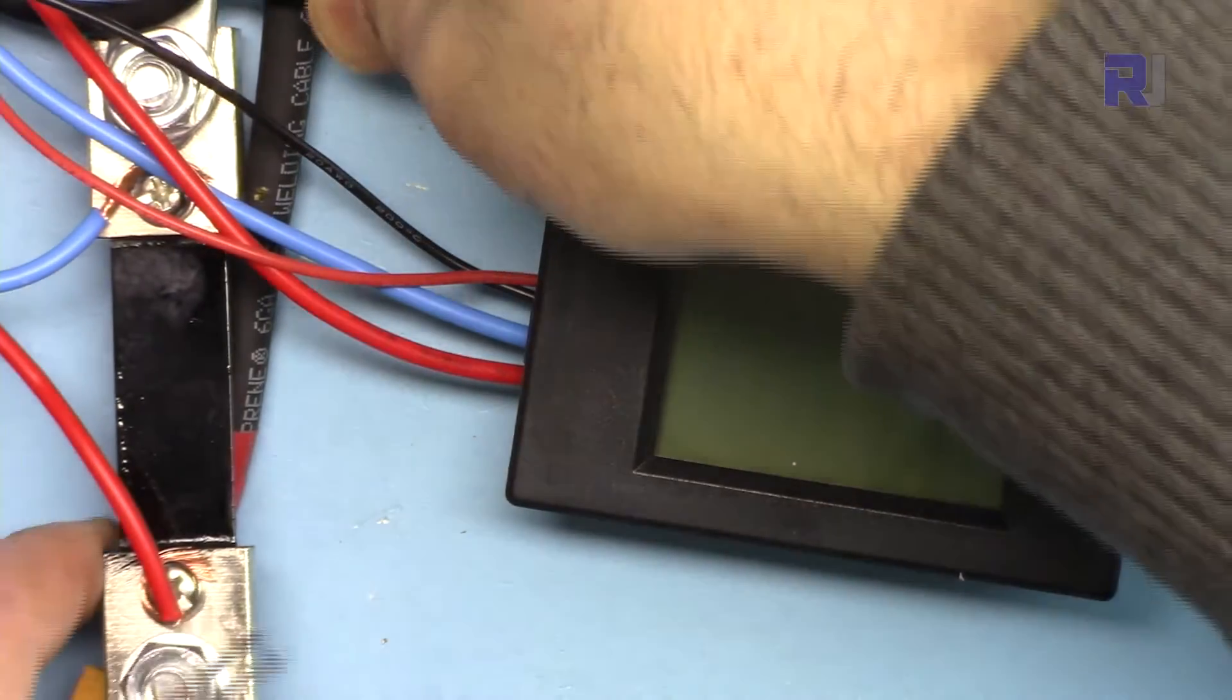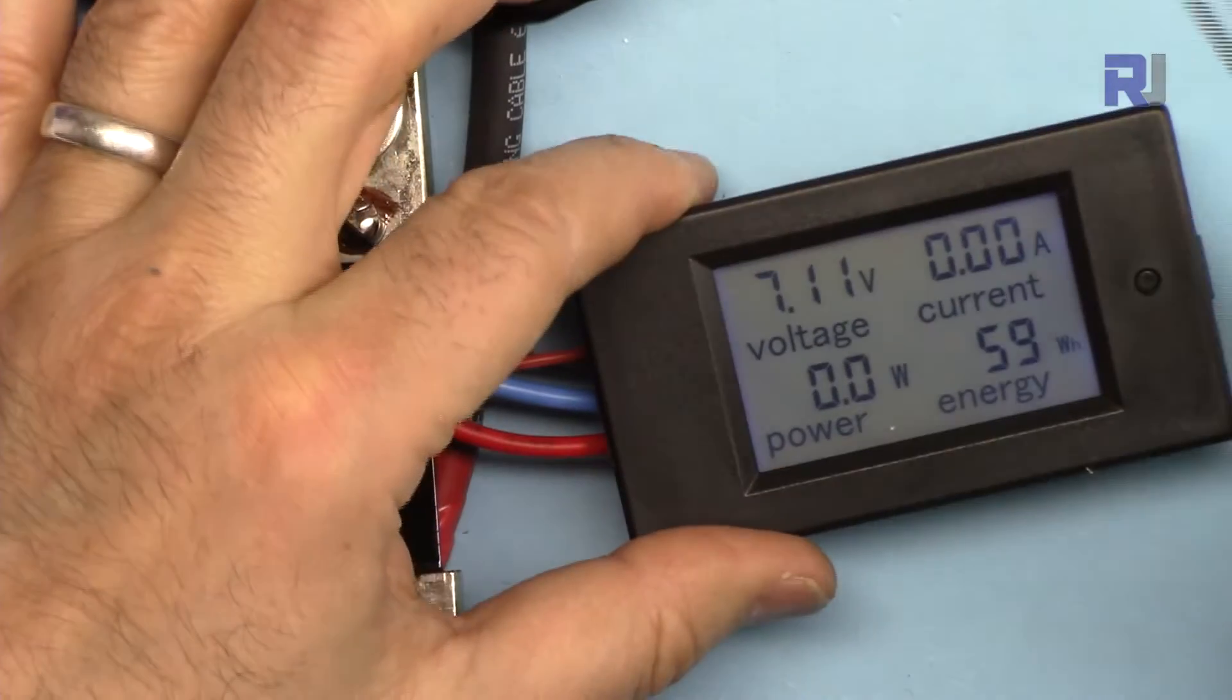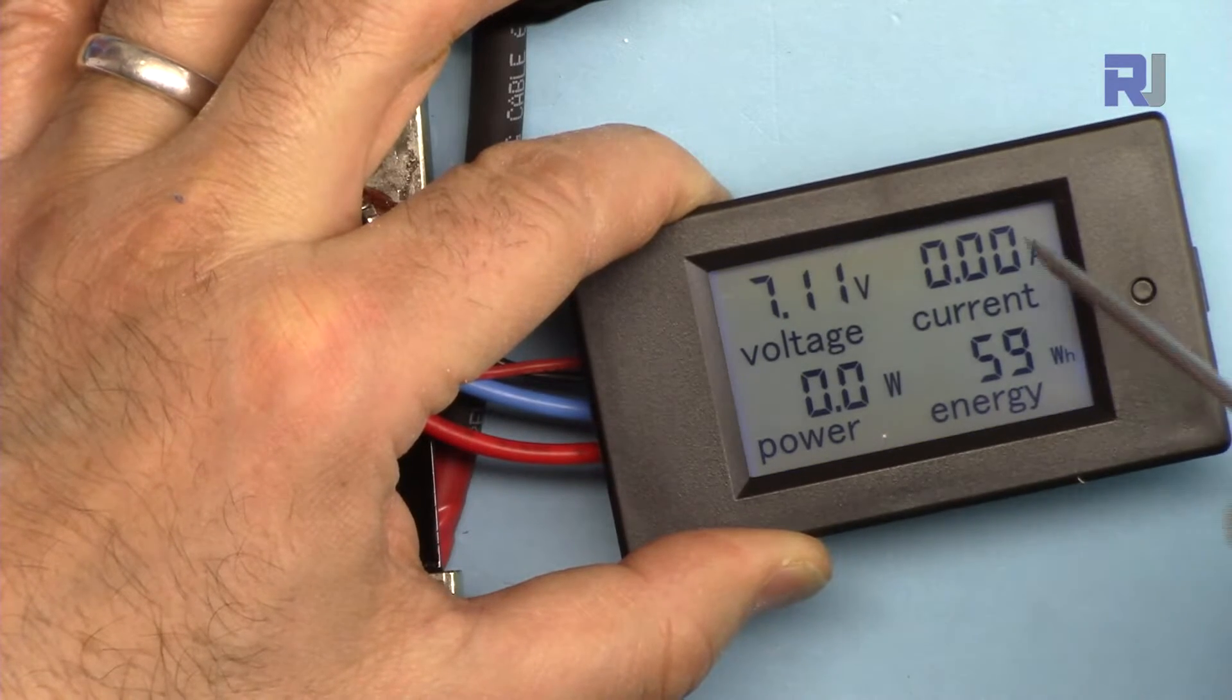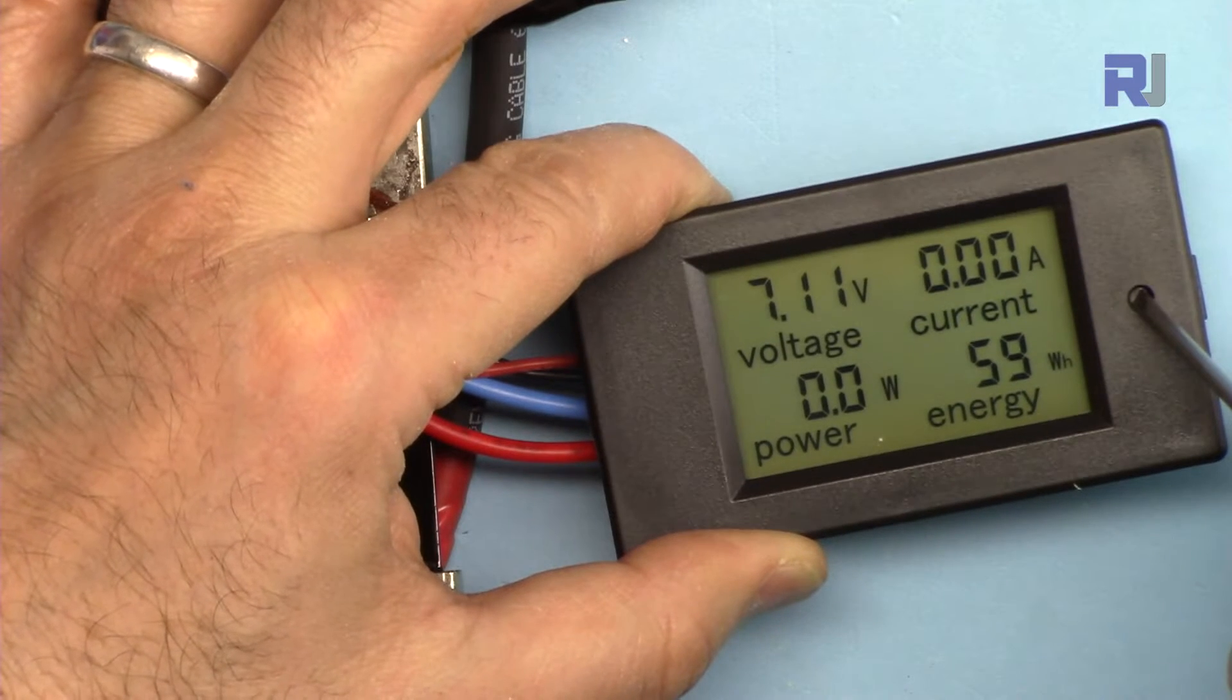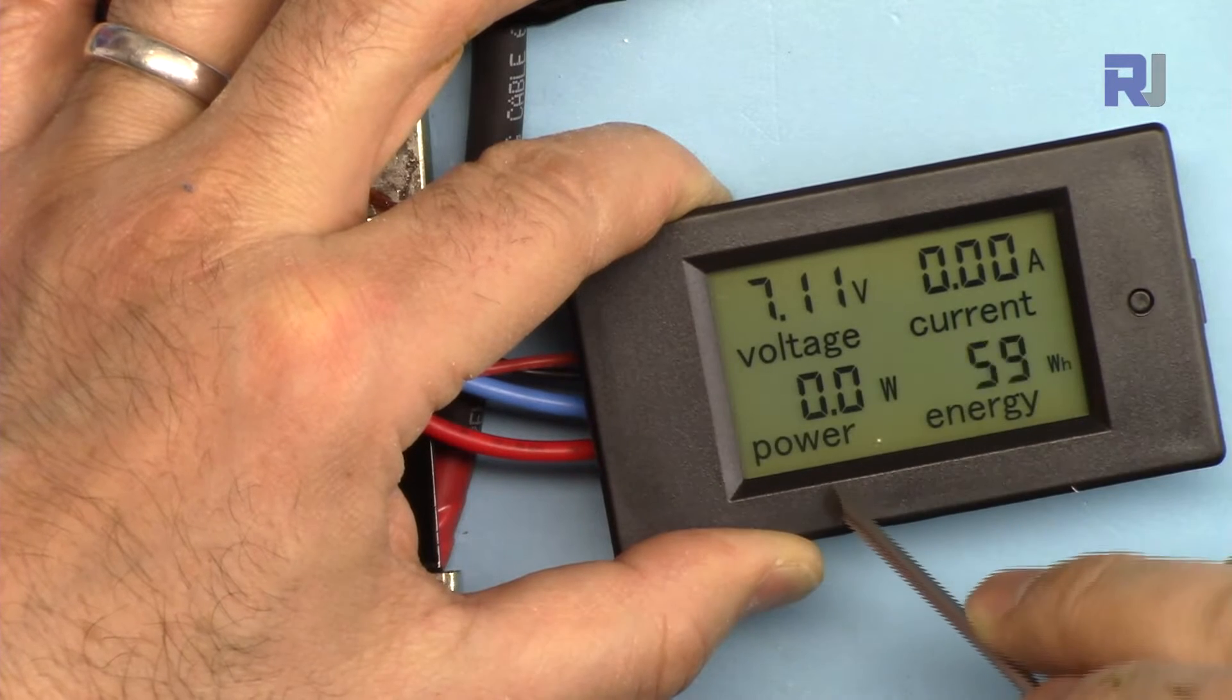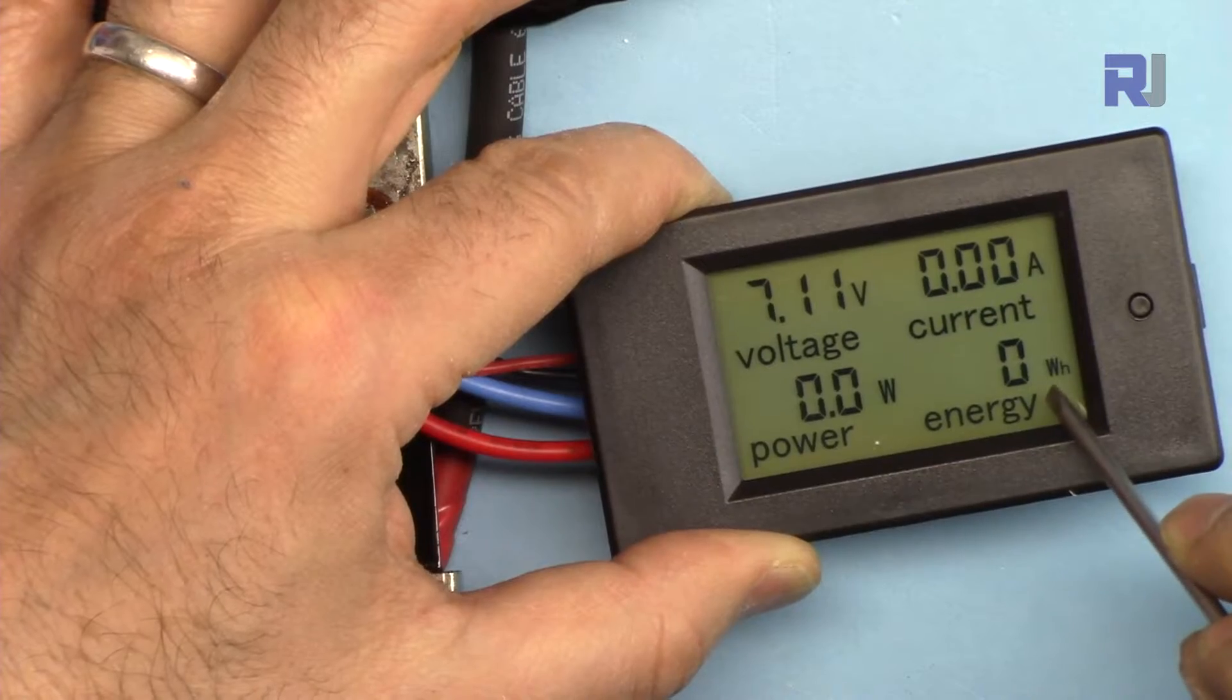If this device blinks, one of the wires is off. I have to connect this push button here that you can push with a screwdriver to turn it on and off. If you want this energy to be reset, you can hold this until you see CLR on the screen. Now if I press it again the energy has been cleared.